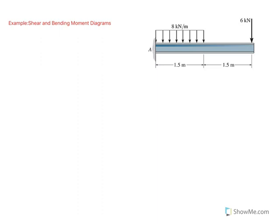We want to look at another example of drawing shear bending moment diagrams. Here we have a cantilever beam which is fixed at A, and we have two loads: a six kilonewton concentrated load and a uniform distributed load with a magnitude of eight kilonewton per meter.